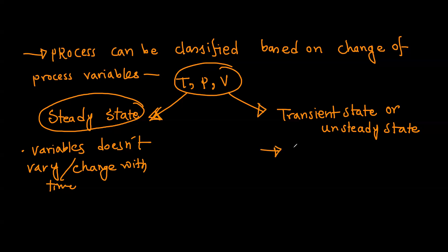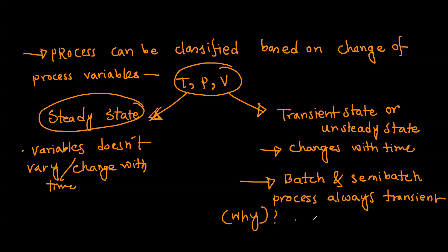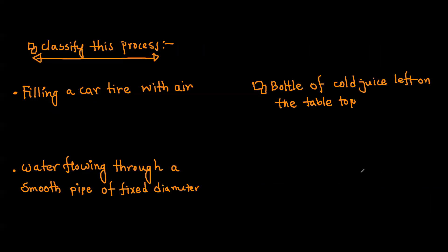Batch process and semi-batch process are always transient processes, because one or more variables change with time. Since we have input or output, pressure or volume will change.